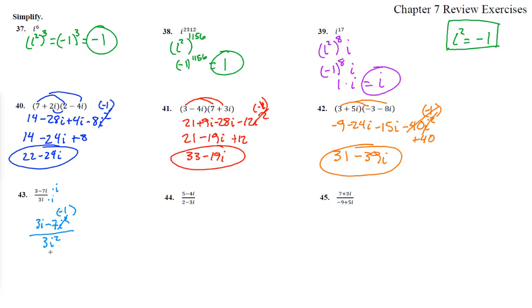i squared is negative 1. So 3 times negative 1, we get a negative 3. And then we have this is a positive 7 and a positive 3i.